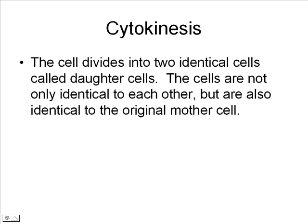After telophase, cytokinesis divides the cell into two genetically identical cells called daughter cells. The cells are not only identical to each other, but are also identical to the original cell that they started from. The original cell is called the mother cell.